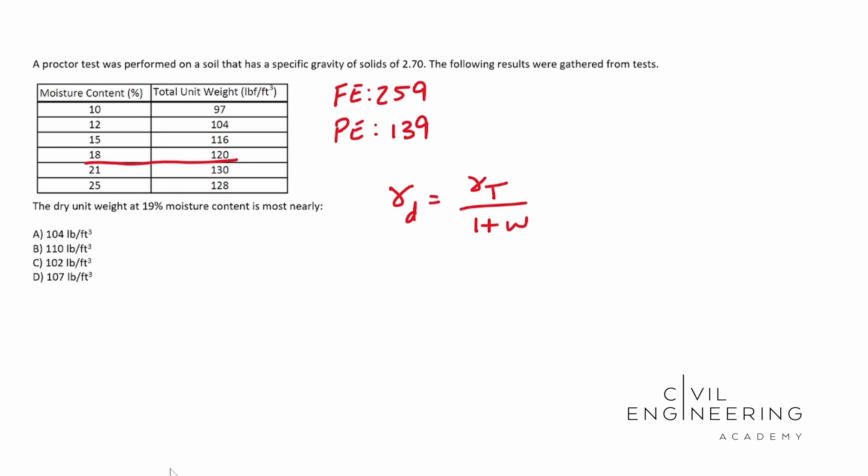Remember, we're trying to think quick. We're trying to solve this guy in like five, six minutes. With that said, whenever you solve for the dry unit weight, so gamma D of 18, you're going to get 101.69. And I'm going to actually move the FE and PE text over a little bit. So I moved the text over for 21%, you end up with 107.44.